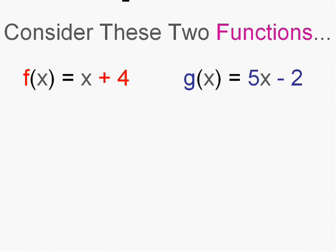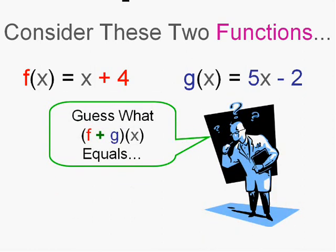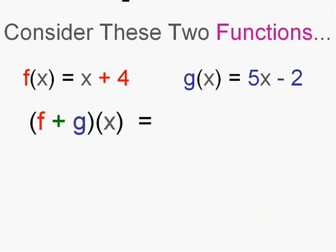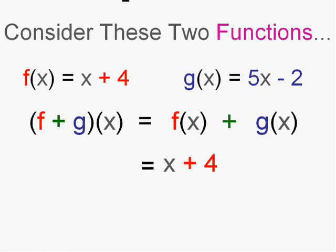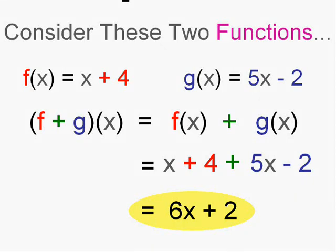Now if we take these two functions f(x) and g(x), guess what f plus g of x equals. Probably it's going to be just what you think. f plus g of x equals f(x) plus g(x), which means x plus 4, that's f(x), plus 5x minus 2. So f plus g of x equals, adding like terms, 6x plus 2. That's the general formula. Kind of weird notation, isn't it?